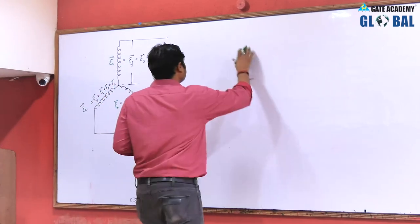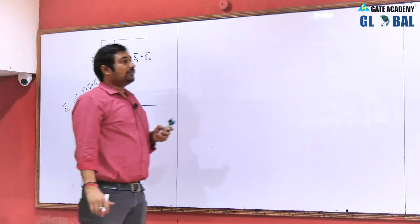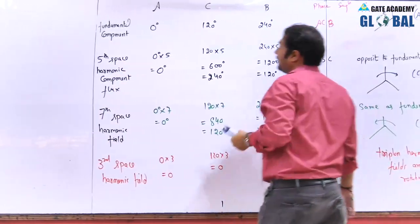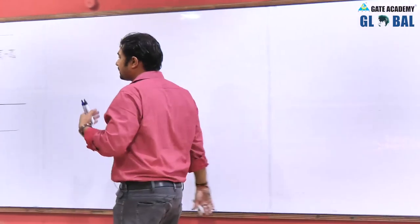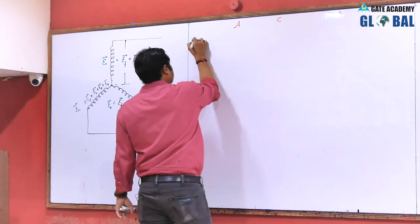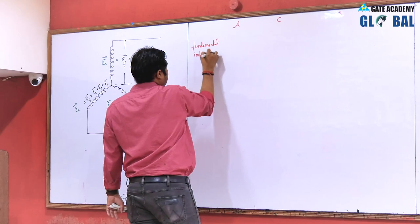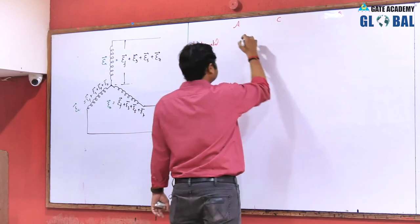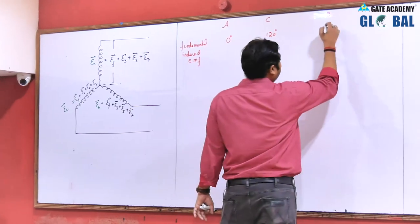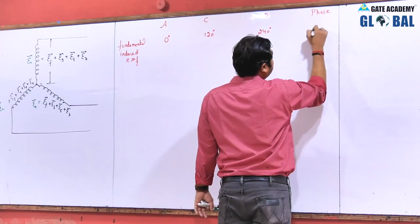If the fundamental flux is rotating in a clockwise direction, then the phase sequence of induced EMF will be as follows. The fundamental flux is rotating in the phase sequence A, C, B. If the fundamental cuts A phase first, then after 120 degrees of rotation it cuts C phase, then after another 120 degrees it cuts B phase. So the phase sequence of induced EMF for the fundamental is A, C, B.